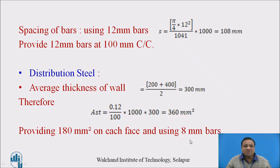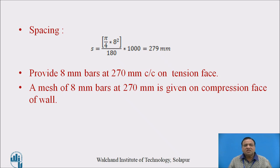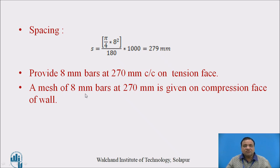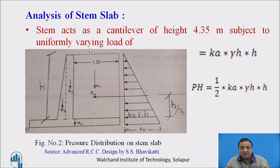The spacing of the 8 mm bars works out to 279 mm; provide bars at 270 mm center to center on the tension face. A mesh of 8 mm bars at 270 mm center to center is also given on the compression face of the wall. On both faces, this minimum reinforcement — distribution steel — is provided.